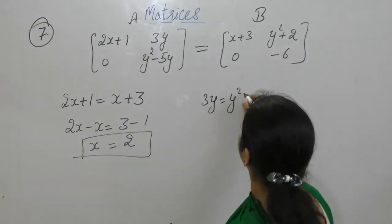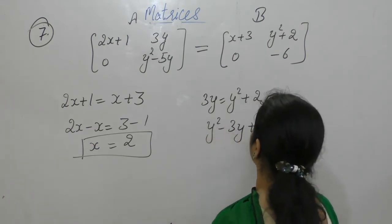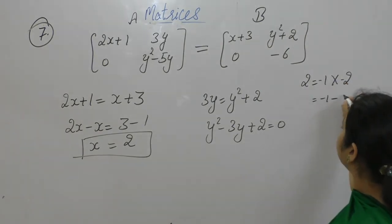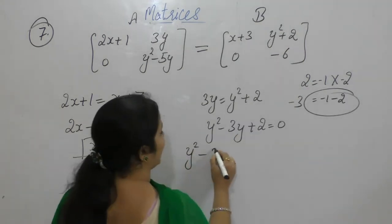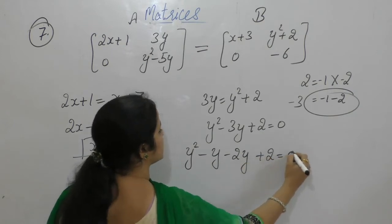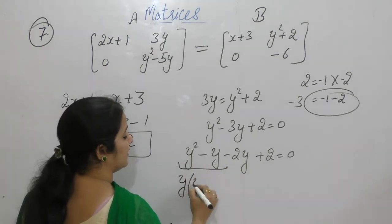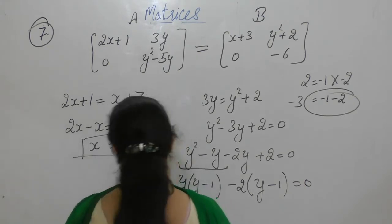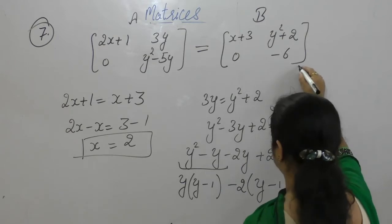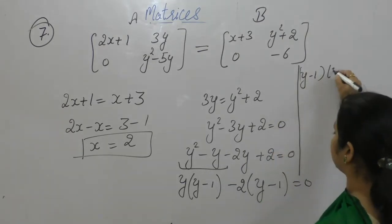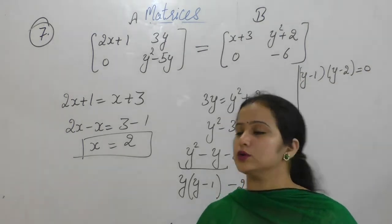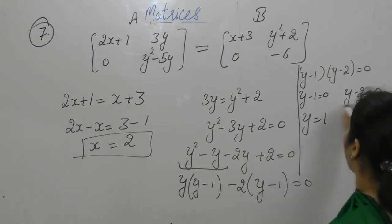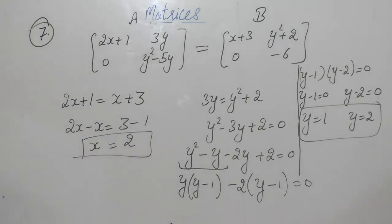Now finding y from 3y = y² + 2. Rearranging: y² - 3y + 2 = 0. Possible factors of 2 are 1 and 2; since -1 + (-2) = -3, we factor as y² - y - 2y + 2 = 0. Taking y common from first two terms and -2 common from last two: (y - 1)(y - 2) = 0, so y = 1 or y = 2.